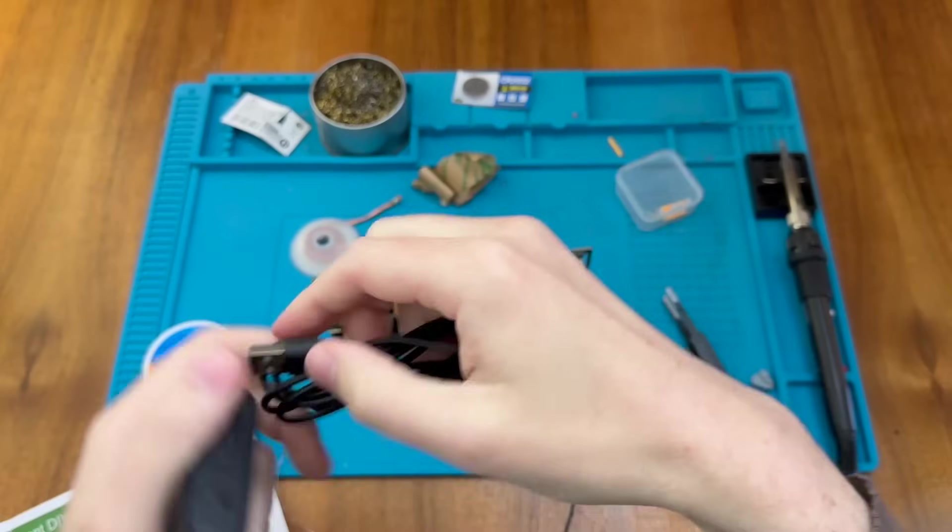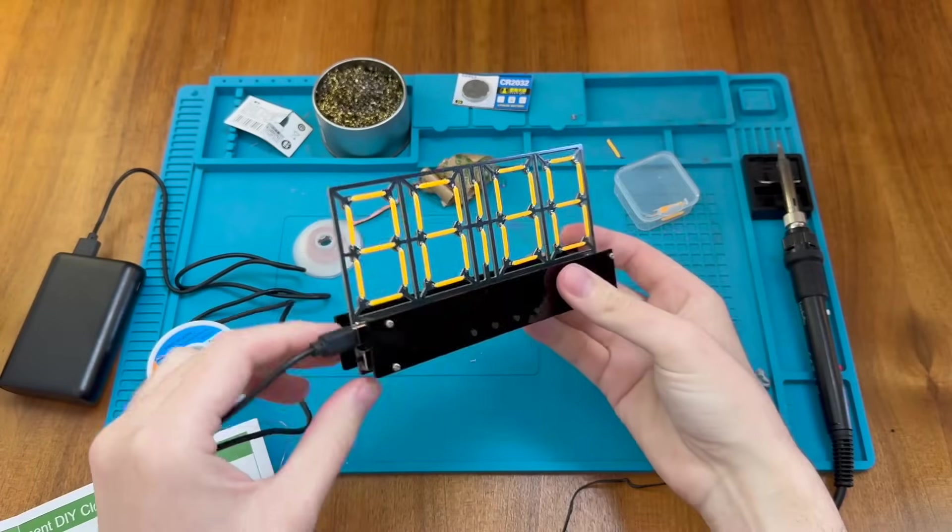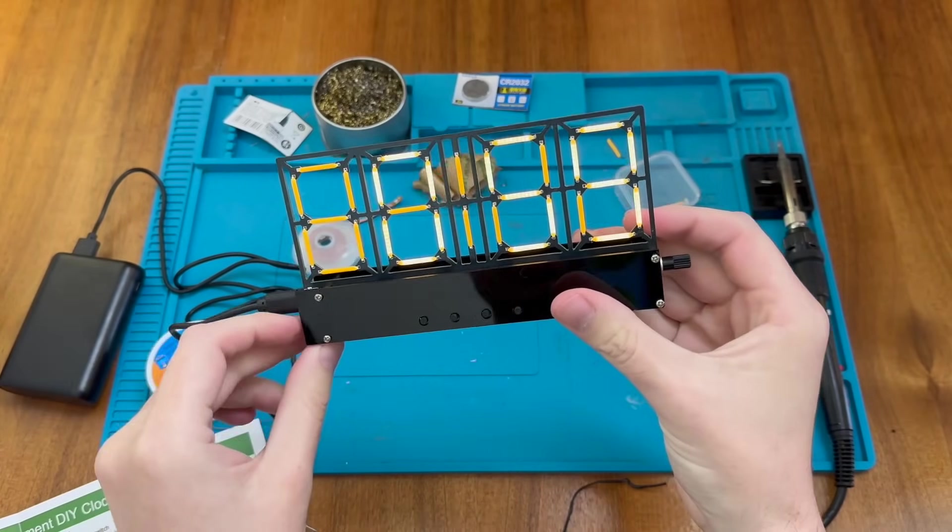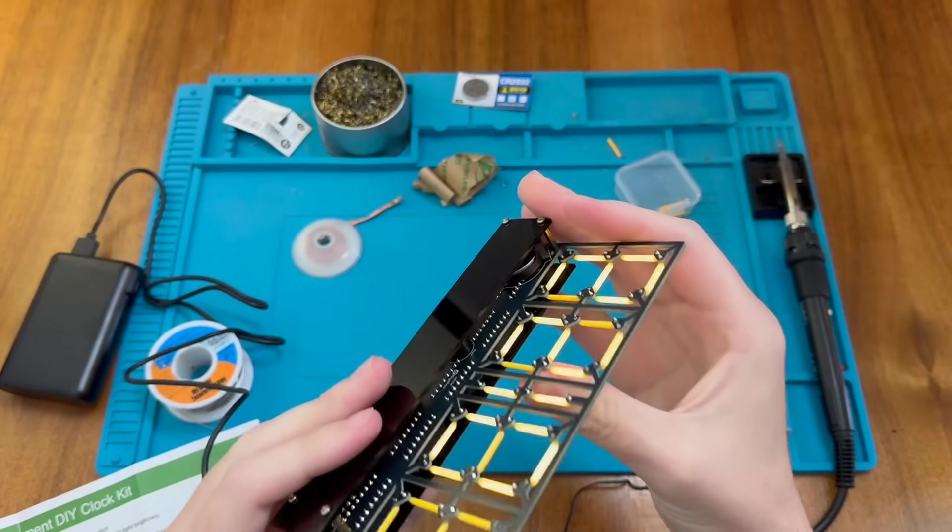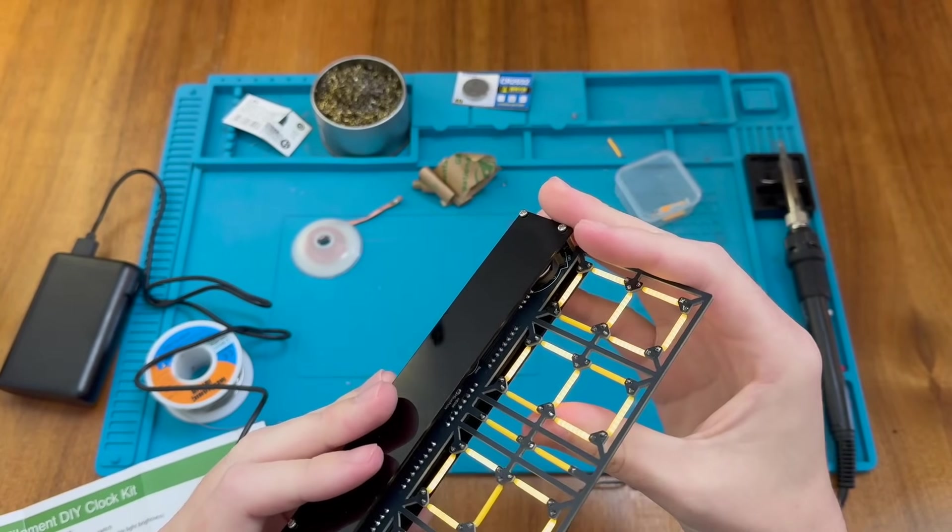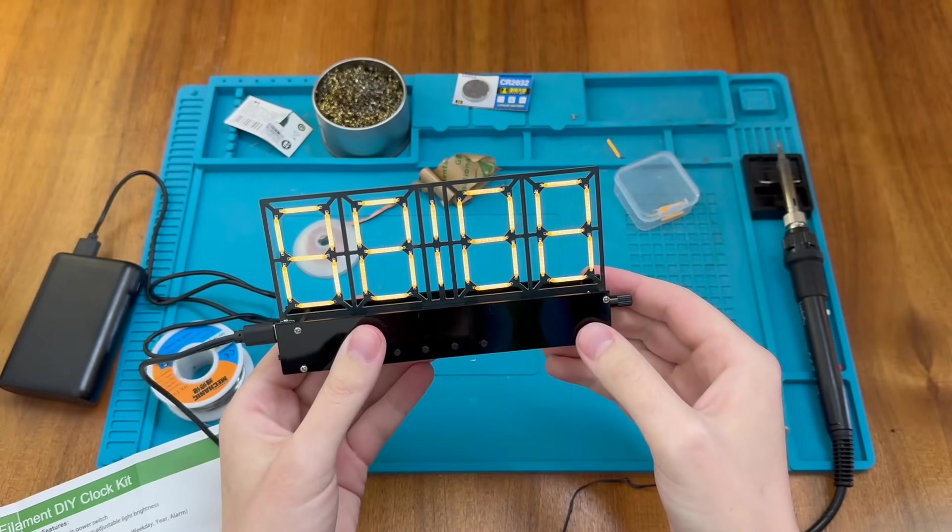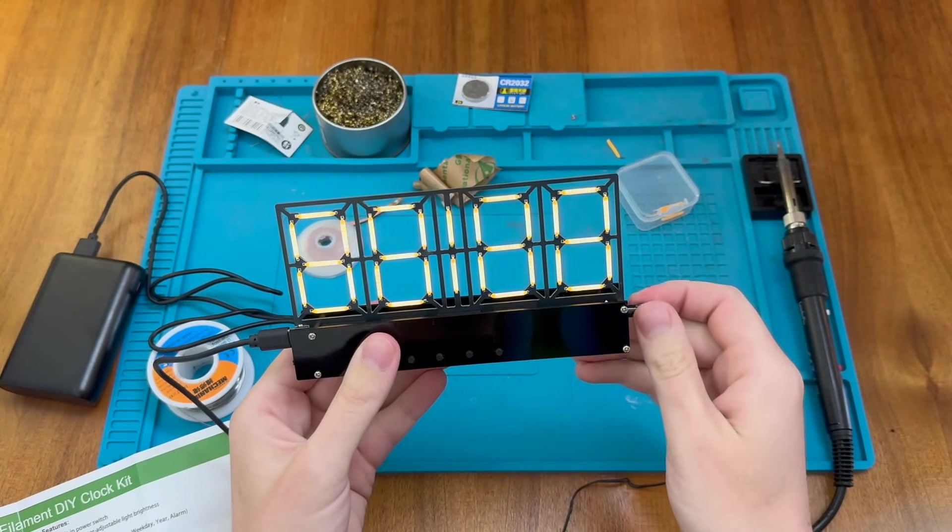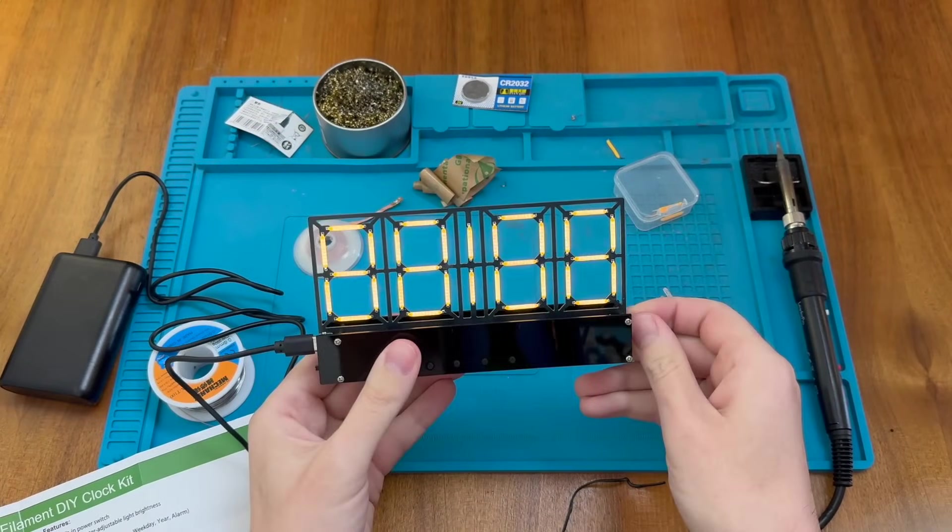And I have a power bank here which we'll just use for testing. And let's try the switch here. There we go. We actually have something showing. It looks like this one is not working. Because I'm assuming that should be a zero. Oh no. Actually all of the bars are actually just working just fine. So there we go. I'm just turning up to maximum brightness and now it's much clearer.